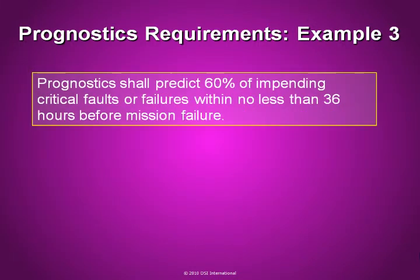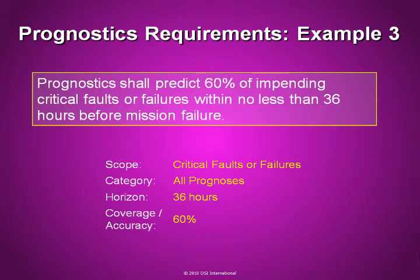A third sample requirement reads: Prognostics shall predict 60% of impending critical faults or failures within no less than 36 hours before mission failure. Notice that in this requirement, coverage and accuracy have been combined into a single percentage. This requirement doesn't specify whether 60% of the critical faults or failures must be prognosed with 100% accuracy, or whether 100% of them must be prognosed with 60% accuracy, or something in between. Moreover, the use of the word 'impending' implies this is a performance requirement, so predictions of prognostic performance should probably be weighted by failure probability — although, again, this interpretation must be agreed upon between the customer and the supplier.